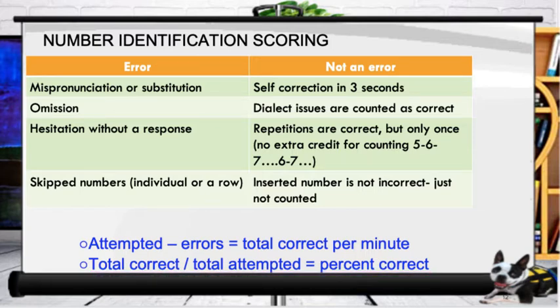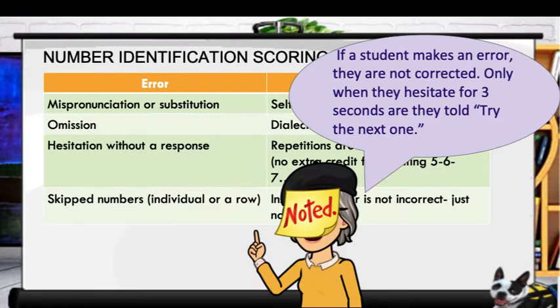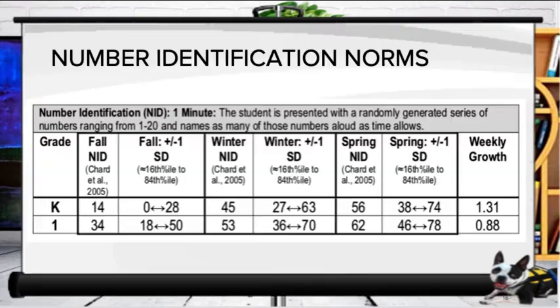Remember, if a student makes an error we don't correct them. If they hesitate for three seconds, we tell them 'try the next one.' So what should our goals be, or what are the norms for number identification?